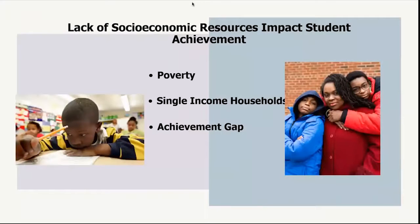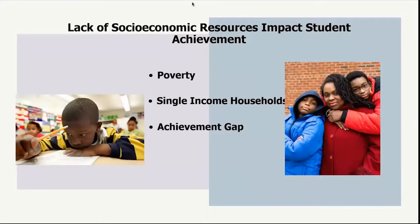Lack of socioeconomic resources impacts student achievement. Poverty impacts a scholar's ability to succeed in school, and children born into poverty are twice as likely to drop out. Black children are more likely to live in single-parent homes, live in extreme poverty, and attend more disadvantaged schools. There is also an evident achievement gap by kindergarten among Black and white students in cognitive functions, reading, and math skills. A child's lack of school readiness entering kindergarten can be an indicator of later academic troubles. Educational redlining and racial bias impact academic performance, school funding, student diversity, and racial segregation throughout communities.